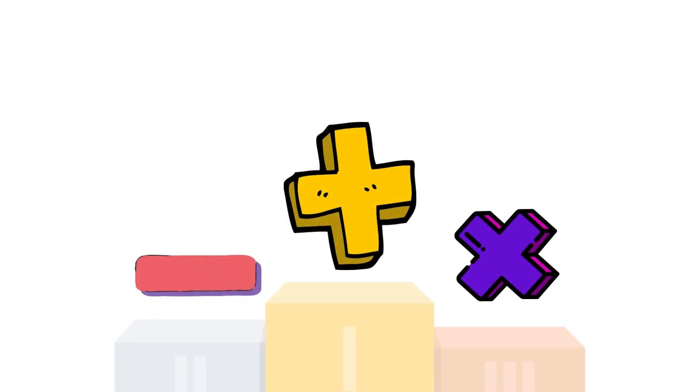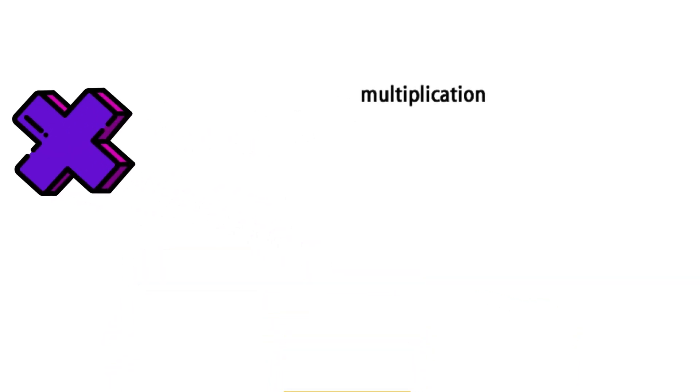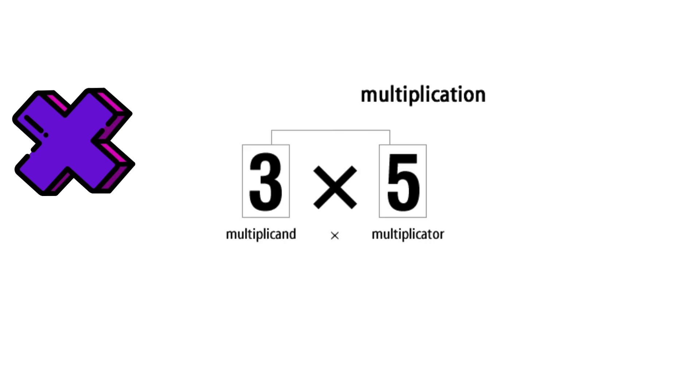Multiplication. Multiplication is the third basic arithmetic operation, defined as iterated addition. One number, the multiplier, tells you how many times to add another number, the multiplicand. These two numbers are called factors, and the result is called a product.